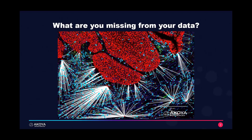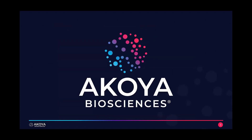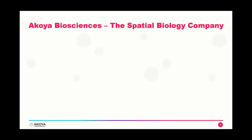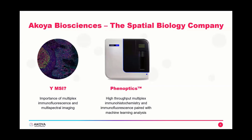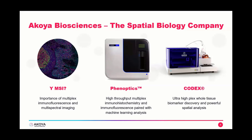This is where spatial biology comes in. Akoya Biosciences' approach allows us to detect more markers on a single tissue than traditional immunofluorescence, while always maintaining single-cell resolution and labeling of cells within their spatial context. I will briefly address the importance of multispectral imaging and multiplex immunofluorescence, then introduce our high-throughput Phenoptics approach based on multispectral immunofluorescence paired with powerful machine learning analysis, and lastly introduce our novel Codex platform for high-plex biomarker interrogation and discovery.